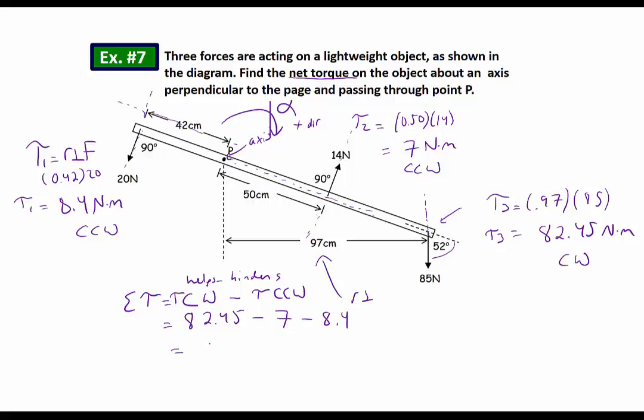So counterclockwise, we've got torque 2, which is 7, and then minus 8.4 was my other one that was going counterclockwise. And my net torque is going to be the leftover, 67.05 newton meters.